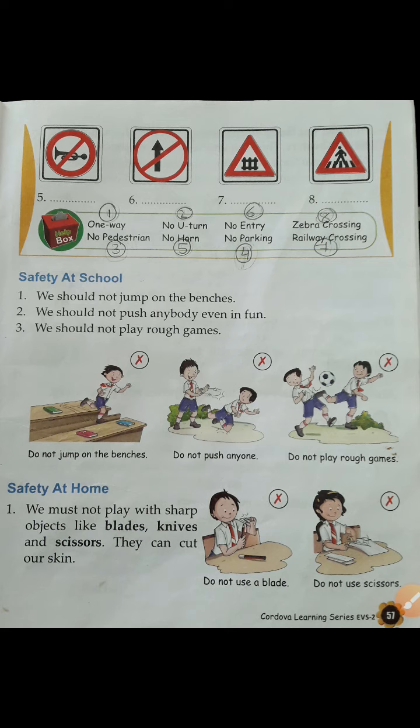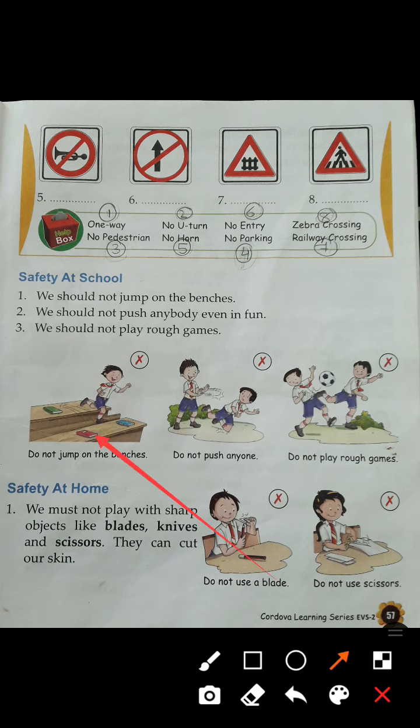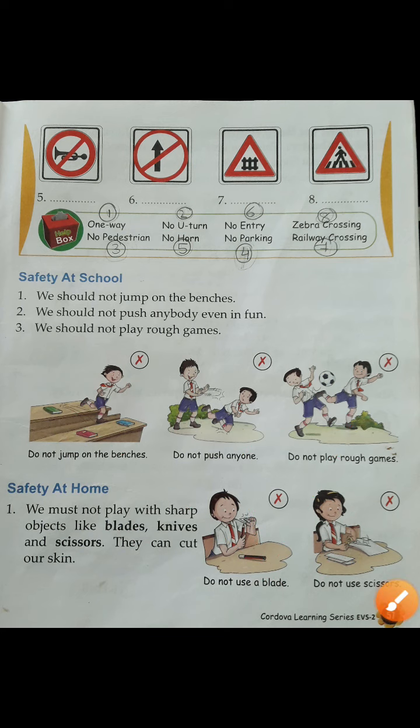Safety at school: safety should be maintained at school as well. Number one, we should not jump on the benches — they are meant to be sat upon and jumping may cause us to trip and fall. Number two, we should not push anybody, even in fun. Number three, we should not play rough games — we should be gentle and not hit or push others while playing.